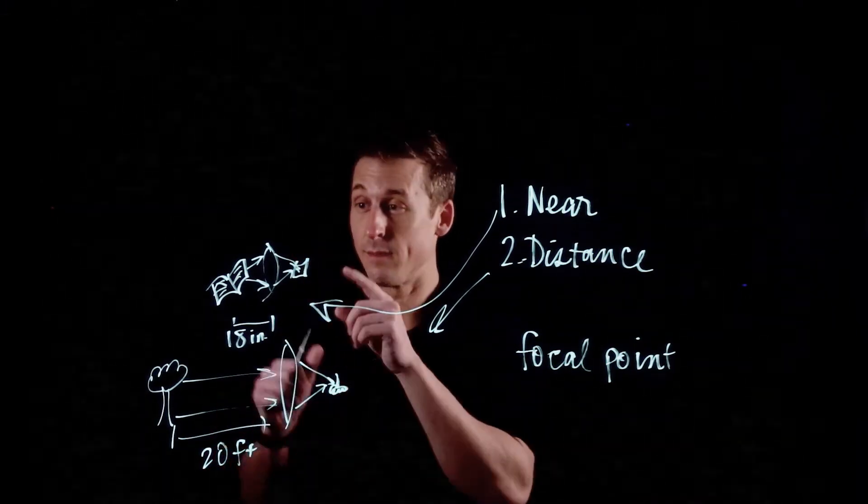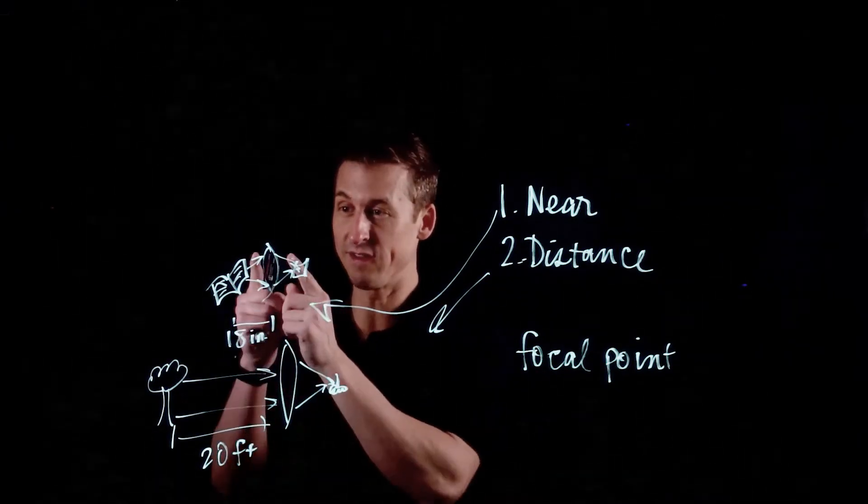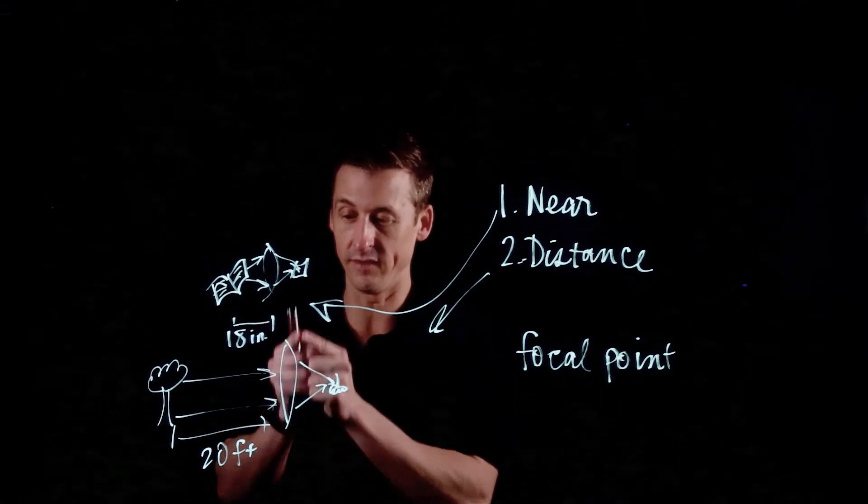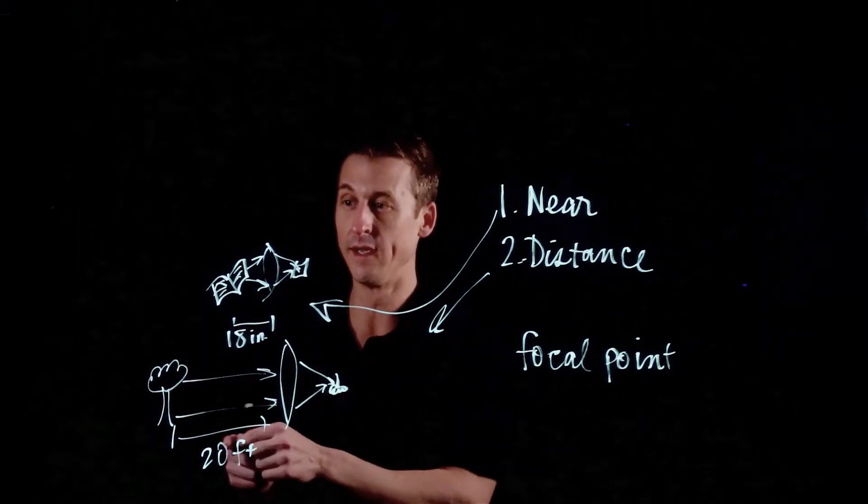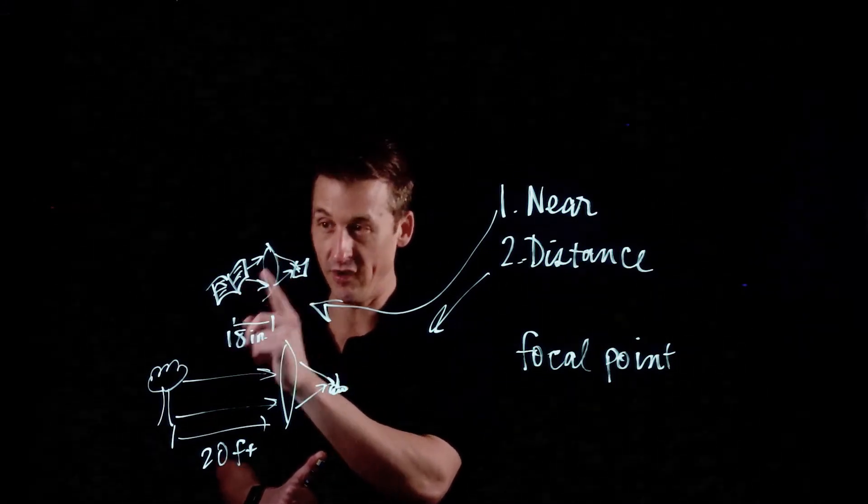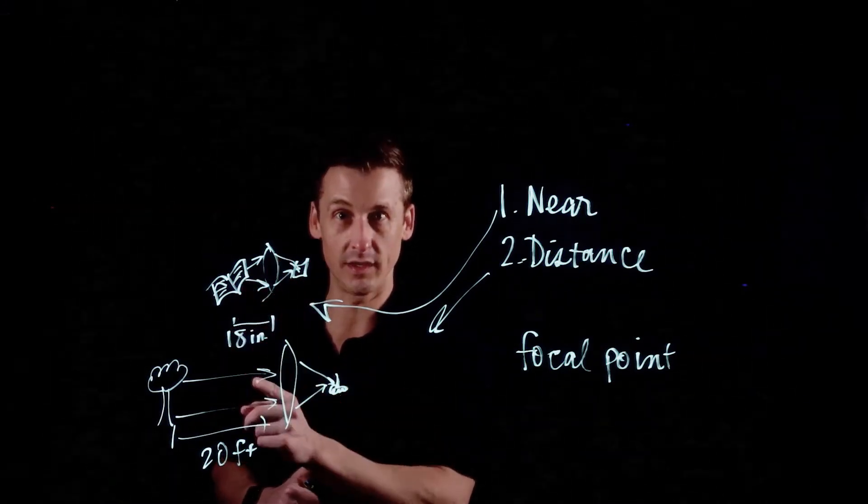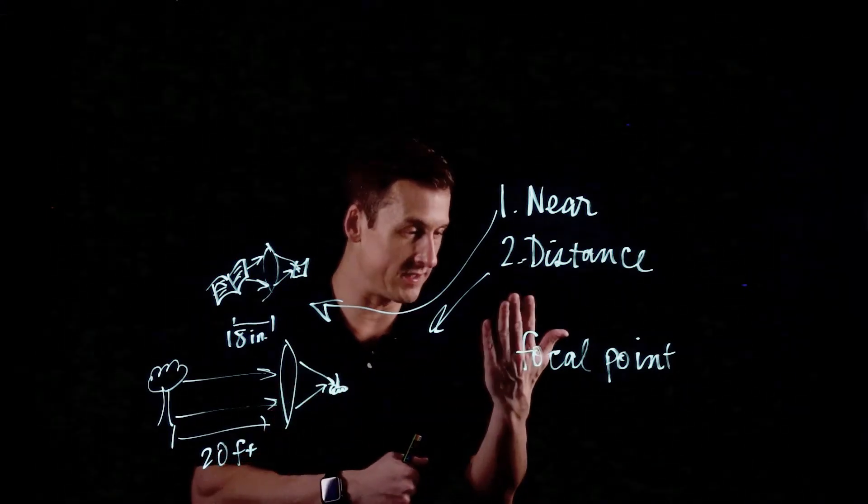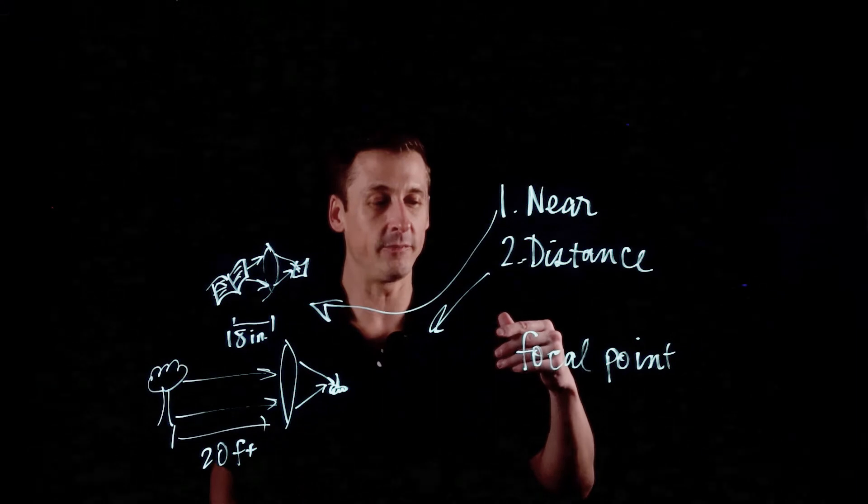When this lens is trying to look at this book and see it clearly, something about it has to be different if it is going to try to look at a tree and see it clearly. That's because the focal point for this lens is very close and it cannot see really clear far away. That is what it is to be nearsighted, to have a focal point that's up close.